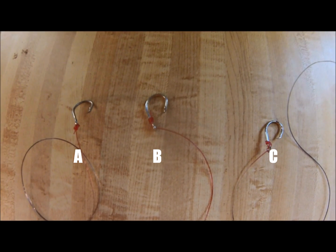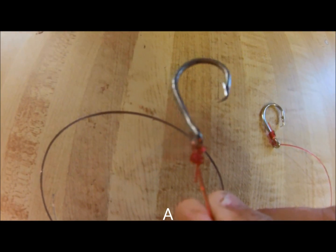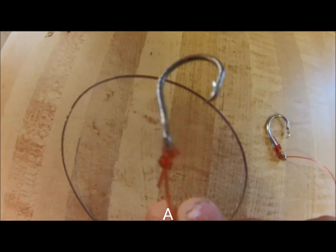We have A, B, and C. The first hook we're going to look at is hook A. This hook is snelled incorrectly. It's not even snelled, it's just tied onto the eye of the hook, making this the wrong choice.